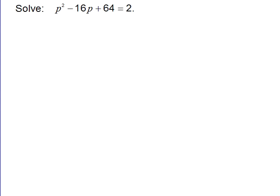Solve the equation p squared minus 16p plus 64 equals 2. Now since this is a quadratic, we'll try to factor it when it's in the right form, but if that doesn't work, then we'll go ahead and use the quadratic formula.